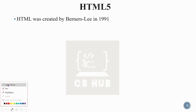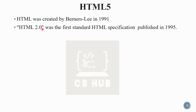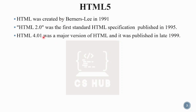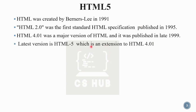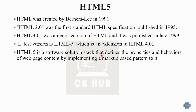HTML was created by Tim Berners-Lee in 1991. HTML2 was the first standard HTML specification, established in 1995. Version 4.0 was a major version in 1999, and the latest version is HTML5.